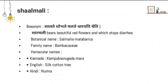The botanical name is Shalmaliya Malabharika and it belongs to the family Bumbakesi. As for vernacular names, in Kannada we call it Kempuburugadamara because it has red color flowers and the kantakas — the spines attached to the tree's stem — are also red in color. When we do the garshan of that spine, it produces a red color.